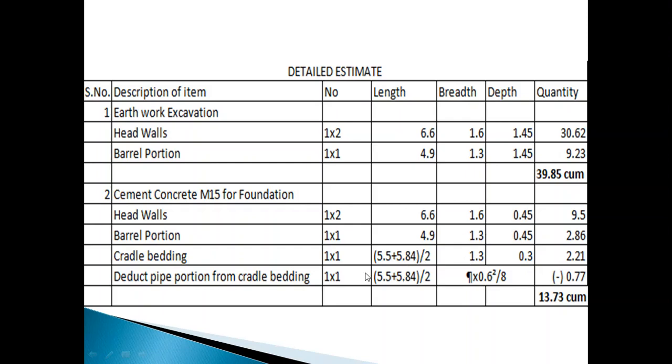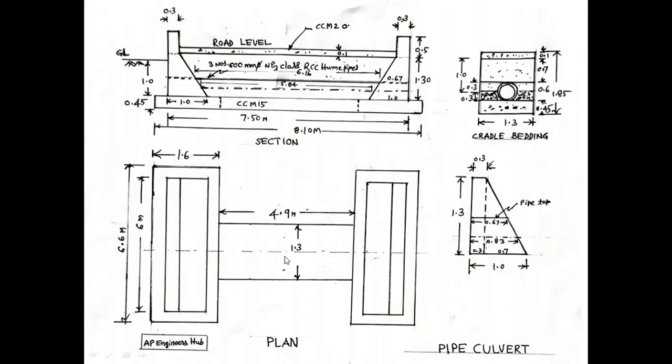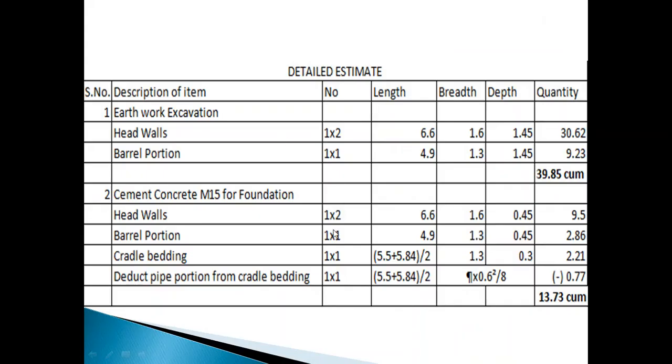Similarly barrel portion. Just cradle bedding. This is cradle bedding: 1.3 by 1.3. Length is here 5.84. This is 7.5 meters minus 2 meters equals 5.5 meters.